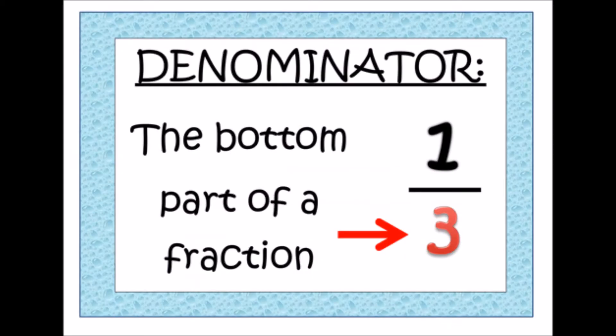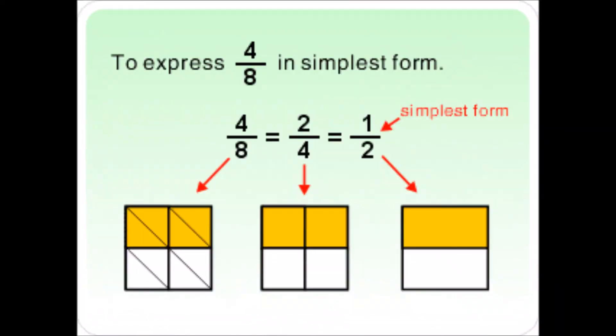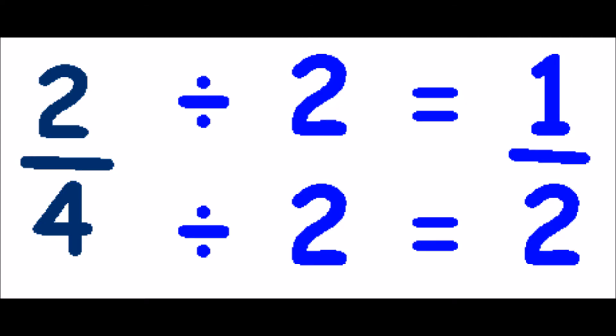My name's Denominator and I'm always down low, I'm the number of parts that make up a whole. In simplest form, I'm the lowest digit I can be, and do to the numerator what you've done to me.